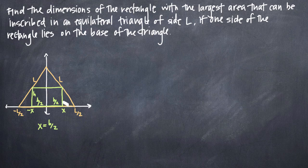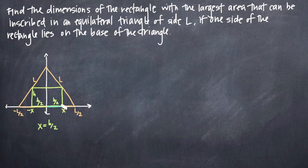I've gone ahead and inscribed a rectangle inside the triangle — inscribing just means fitting a rectangle inside the triangle — and the goal is to maximize the area of this rectangle. We'll label the dimensions: height as H and base as B. If the entire base is B, then each half is B over 2. We'll say that the distance from the y-axis to the corner of the rectangle is x, so x equals B over 2.